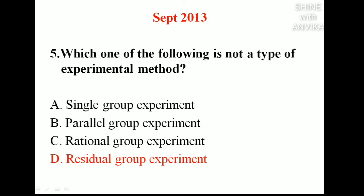Next question: which one of the following is NOT a type of experimental method? In a single group experiment, a group of students performs an experiment to find the same answer. In a parallel group experiment, more than one group performs an experiment — one group finds answer A while another finds answer B — so the experiments happen in parallel.